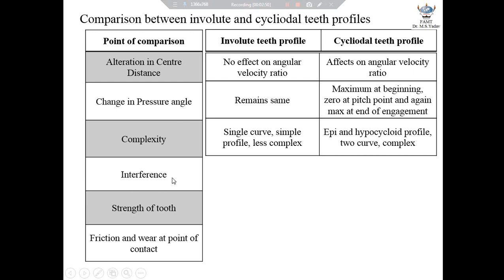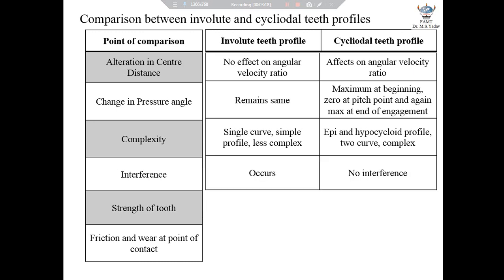The fourth point is occurrence of interference. Interference is a phenomenon where a point on the gear tooth — in fact the top of the gear tooth — undercuts the root of a meshing gear. We will have a detailed discussion on occurrence of interference in a separate video lecture. Interference occurs in case of involute teeth profile if the addendum circle radius increases beyond a certain limit. However, in case of cycloidal teeth profile, there is no chance of occurrence of interference.